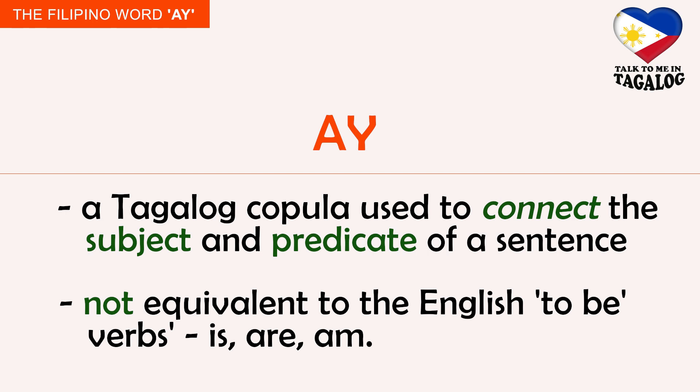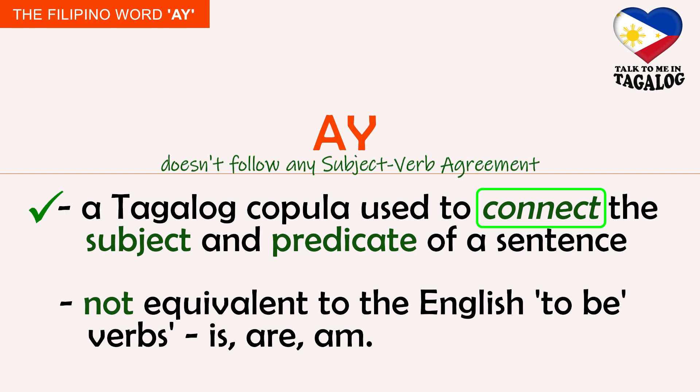So, what is 'ay' and why do we have it in the Filipino language? Well, 'ay' is a Tagalog copula that connects the subject and the predicate of a sentence. Our keyword here is 'connect', and that is the only rule of 'ay' — to connect the subject and predicate. Unlike 'is', 'are', or 'am', 'ay' doesn't follow any subject-verb agreement because it simply connects the topic or subject of the sentence to its predicate.